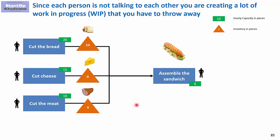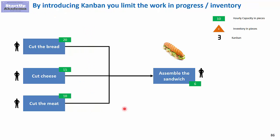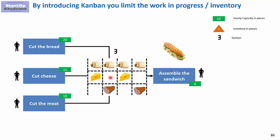What you want to do is limit the inventory somehow — you want to tell the person cutting the bread to stop cutting because assembly can't keep up. But you also don't want the person assembling sandwiches to have to talk to each and every person independently. So what we can introduce is some sort of limitation, and one of these limitations is the so-called Kanban.